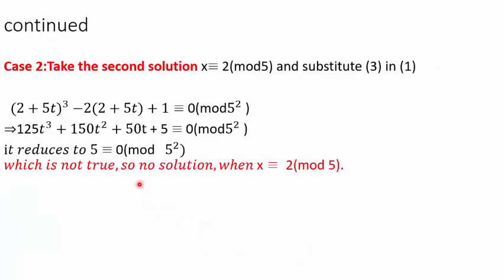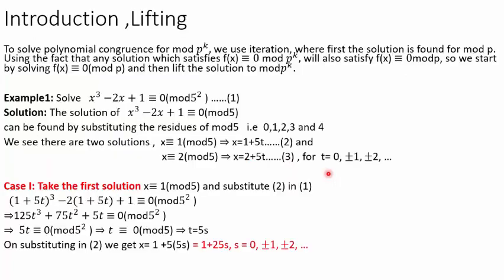Let's take the second case where x ≡ 2 mod 5. We substitute x = 2 + 5t in the original congruence and simplify. Using the same fact that 125, 150, and 50 are all ≡ 0 mod 25, we have no t to solve. So this congruence is not satisfied — there is no solution when x ≡ 2 mod 5. Going back, we see that only one solution exists for this polynomial congruence: x = 1 + 25s.